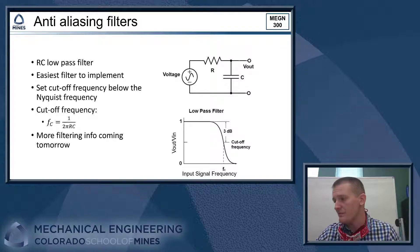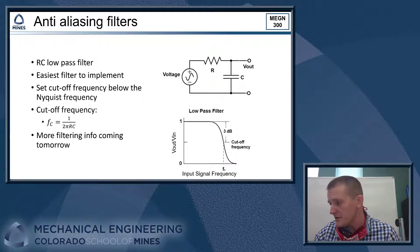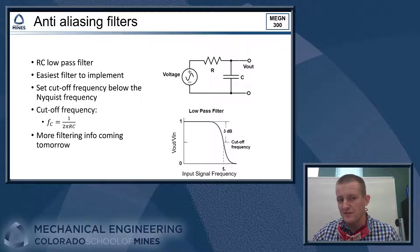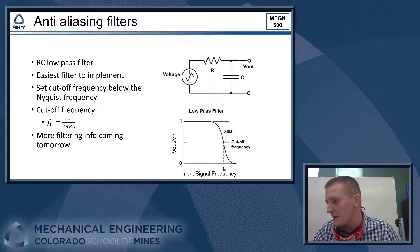All right, typically the way we would do this, the easiest way to do this is with an RC low pass filter. So there's the circuit diagram for you right there. It's the easiest filter to implement. It's just got two components. And the cutoff frequency for that is pretty easy to calculate. It's just one over two pi RC. And we set that cutoff frequency to be just below the Nyquist frequency, kind of as close as we can get it with the components that we have on hand.